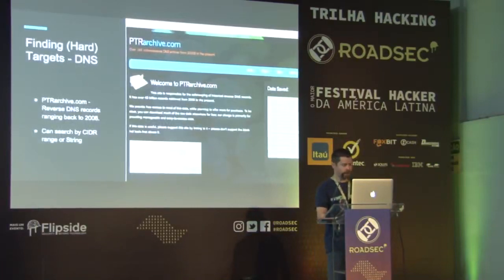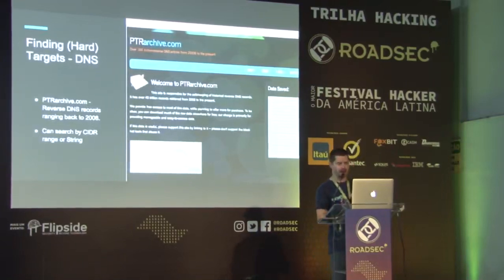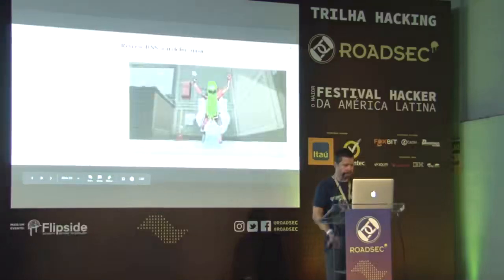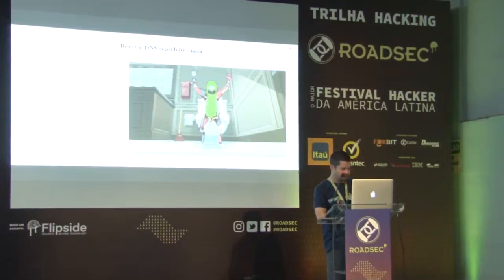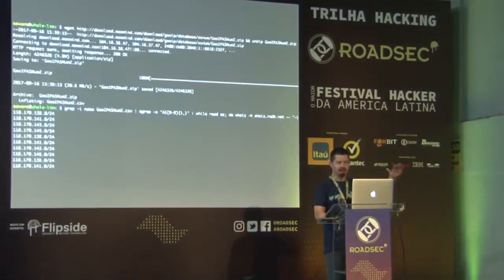PTR Archive has a bunch of DNS records dating back to 2008 — almost 10 years' worth of DNS on the internet. You can search it by an IP address, an IP range, or an organization name. In this screenshot, you can see we've put in an IP address and also 'NASA,' and here are the results — we get some NASA hosts, a nasa.gov host, some more NASA hosts. Both with PTR Archive and the AS numbers, we didn't touch NASA. We still haven't sent any packets to NASA.